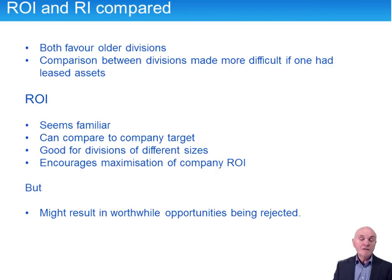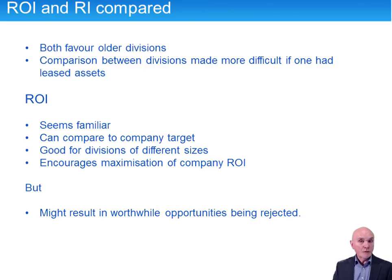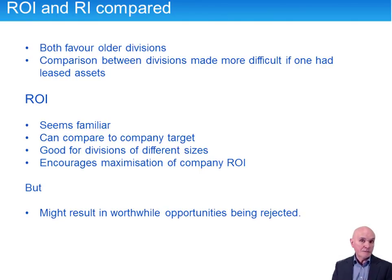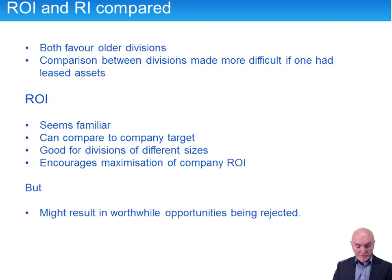Secondly, comparison can be difficult. If one division owns all its assets and another leases them — assuming operating leases — those leases won't appear on the statement of financial position or in capital employed. A division which leases assets will appear more favourable under both return on investment and residual income, because its capital is less and therefore both measures are higher.